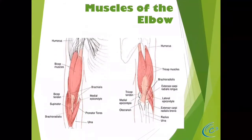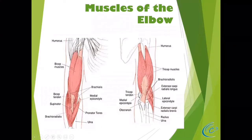Here we have the muscles of the elbow. On the anterior aspect it's the biceps. Notice how this muscle belly divides into two separate tendons — this is the reason why it's called a biceps muscle. Down at the bottom, it's also called the biceps tendon. This is why you need to know the direction and location of the lesion. If there's a tear of the biceps tendon up here, you don't treat it surgically.